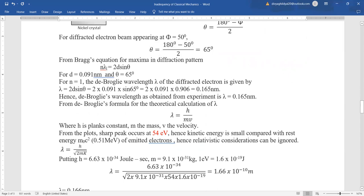The distance between layers for nickel crystal is given as 0.091 nanometers. So it becomes 2 times d, which is 0.091, times sin 65 degrees. Lambda comes out as 0.165 nanometers. Hence, de Broglie wavelength obtained from the experiment is 0.165 nanometers.